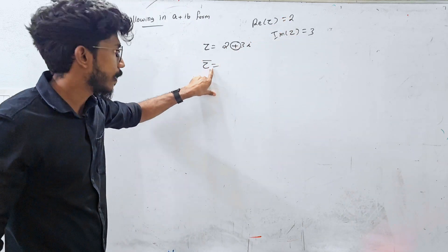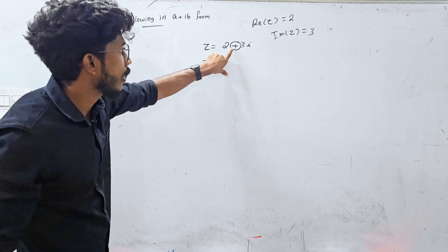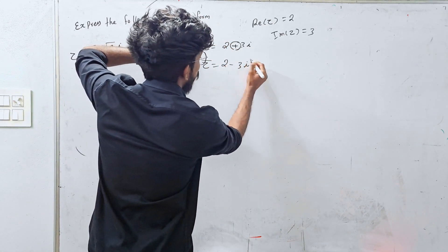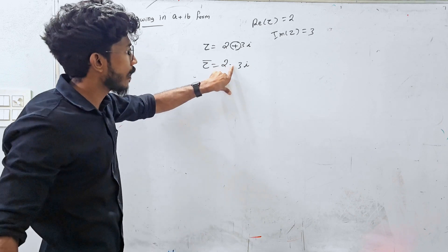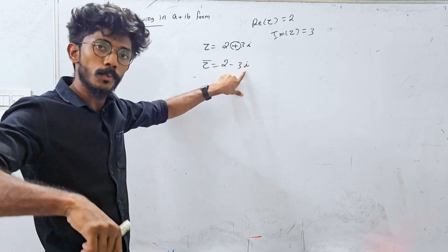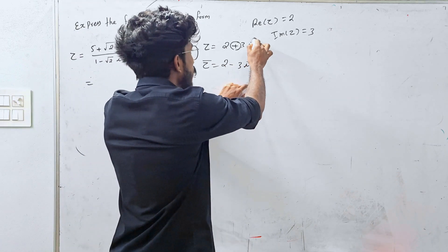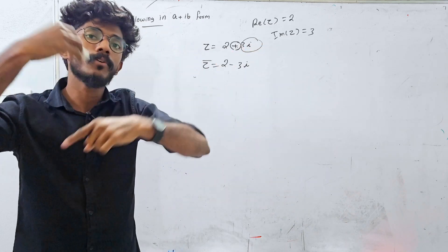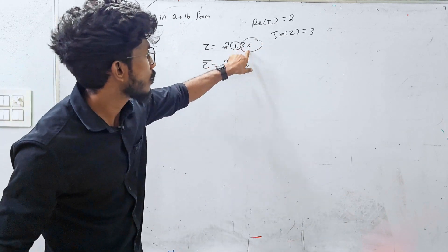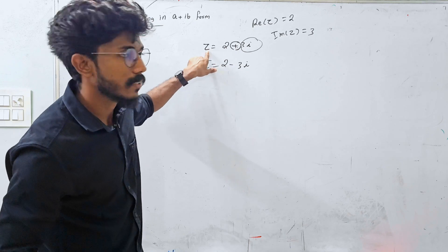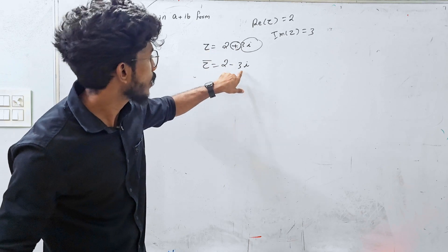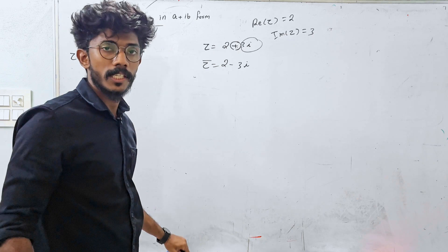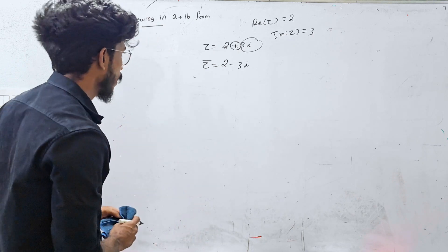The conjugate is 2 minus 3i. So if Z is 2 plus 3i, then Z-bar (conjugate) is 2 minus 3i. Similarly, the conjugate of 1 plus 2i is 1 minus 2i.